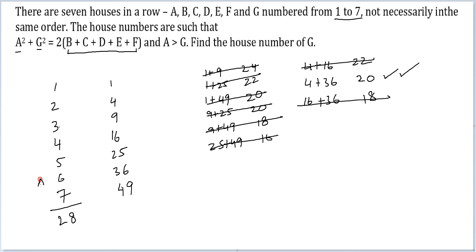Here, this would be A's house number because A was greater than G, and this would be G's house number. So the house number of G will be 2.